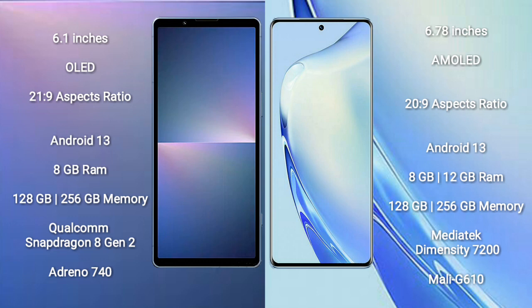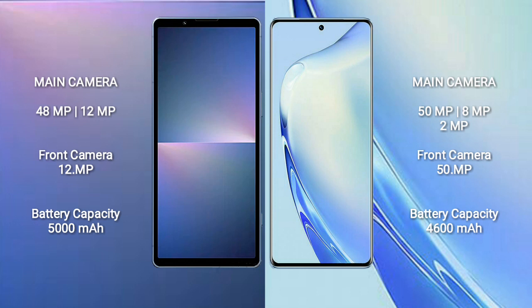The Sony Xperia 5 Mark 5 comes with 8GB RAM and 128GB to 256GB internal storage, powered by a Qualcomm Snapdragon 8 Gen 2 processor with an Adreno 740 GPU. The VIVO V27 comes with 8GB to 12GB RAM and 128GB to 256GB internal storage, powered by a MediaTek Dimensity 7200 processor with a Mali-G610 GPU.